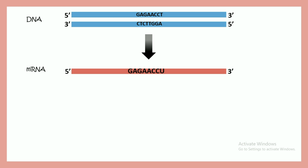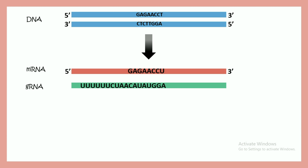This is the DNA in a trypanosome mitochondria, from which mRNA is produced. There is a guide RNA that binds with this mRNA. It has two regions: an editing region and an anchor region. The anchor region helps the guide RNA attach to the specific site, while the editing region works as a template for addition of new bases.